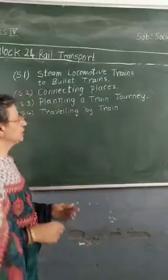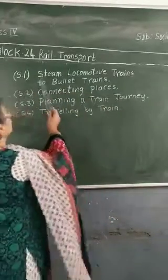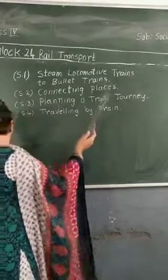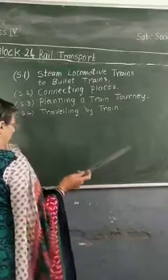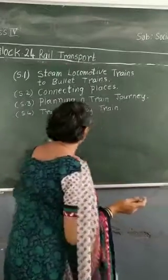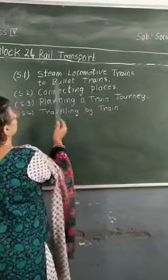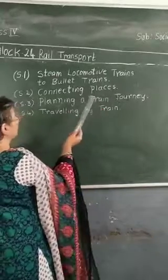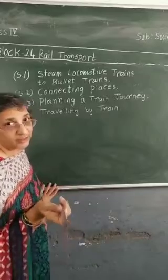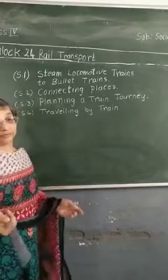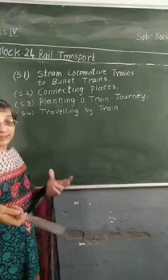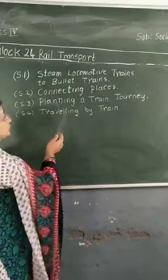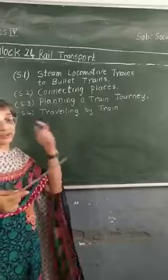Now, what have we learned in Block 24? We have transferred S1 steel locomotive trains to bullet trains, which I have explained to you. Please open your video and listen — that explanation is very important, children. S4 connecting places, which I showed you.